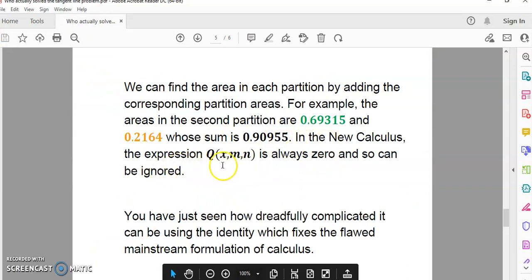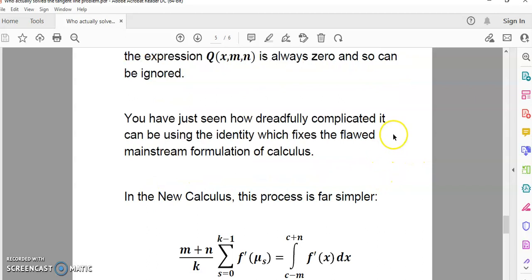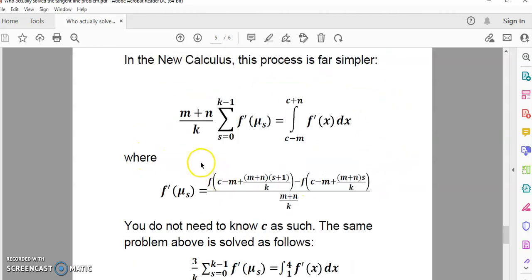In the new calculus, the expression Q of x,m,n is always 0, and so can be ignored. Now, you have just seen how dreadfully complicated it can be using the identity, which fixes your flawed mainstream formulation of calculus. In the new calculus, this process is far simpler. So, what we have in the new calculus is this summation here on the left-hand side. This is the definition of the definite integral in the new calculus. Do you see any limits there? Do you see infinity? It doesn't matter what the value of k is. It can be a value from 1 to as large as you like, and the answer will always be the same.